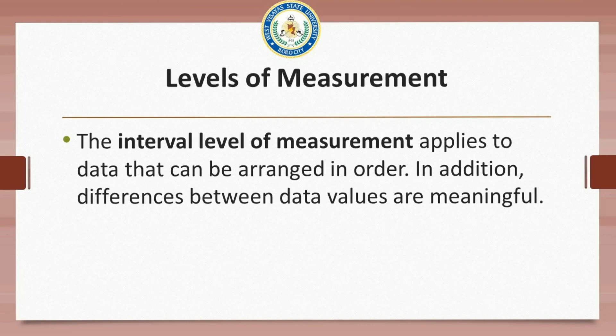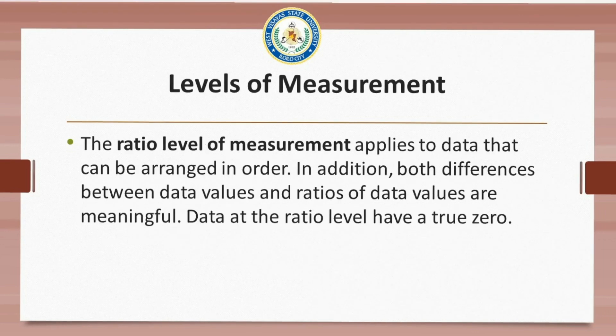The interval level of measurement applies to data that can be arranged in order, and in addition, differences between data values are meaningful. The ratio level of measurement applies to data that can be arranged in order, just like interval data. In addition, both differences between data values and ratios of data values are meaningful. Data at a ratio level have a true zero, meaning that a zero value signifies the absence of that characteristic.